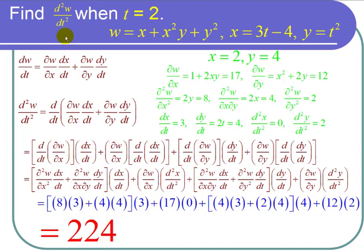So the second derivative of w with respect to t when t equals 2 is 224. And that completes the problem.